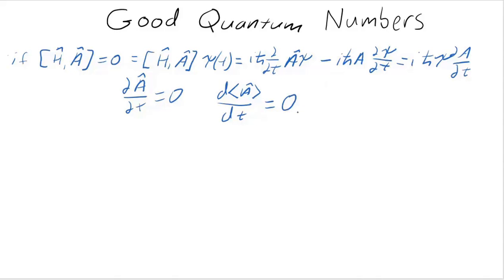Which also then means that the expectation value of A for the lecture we just had on Ehrenfest theorem is also 0. So the observable is a constant. Any operator that commutes with the Hamiltonian is conserved. The eigenvalues then are called good eigenvalues. That is the eigenvalues of operator A. If a quantum number goes into that eigenvalue, then it's a good quantum number.